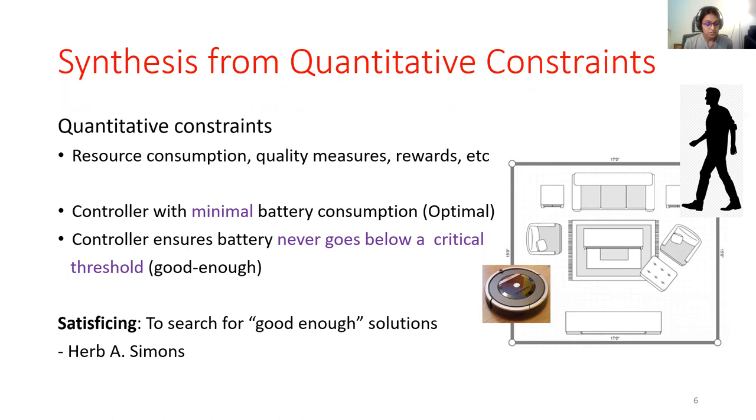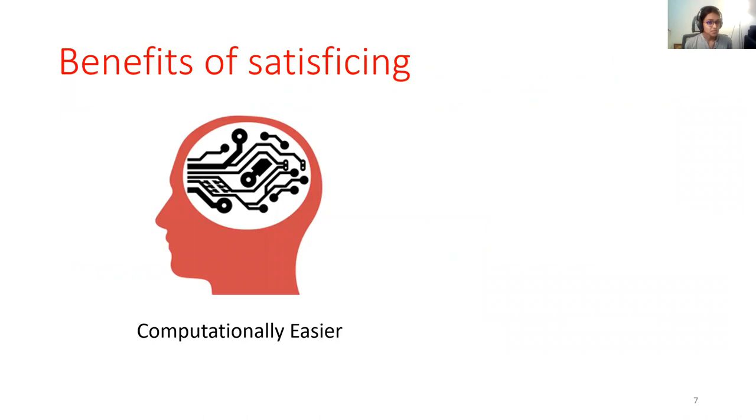There could be additional benefits of satisficing also. One, that it may be computationally easier to solve satisficing than it is to solve optimization. This is possibly because there are fewer restrictions on good enough solutions than there are on optimal ones, and hence searching for them may be easier.